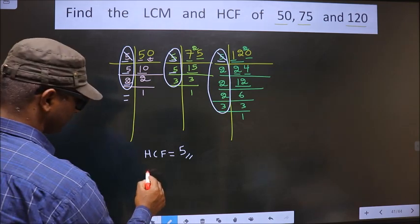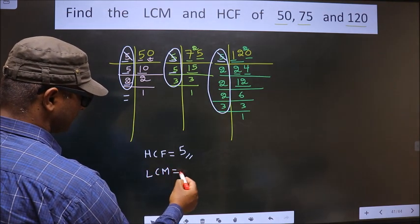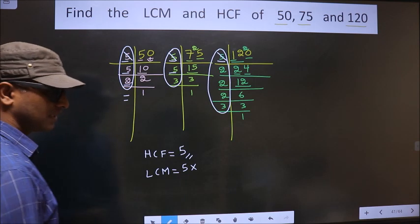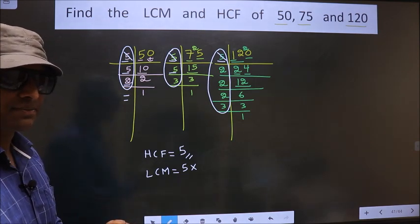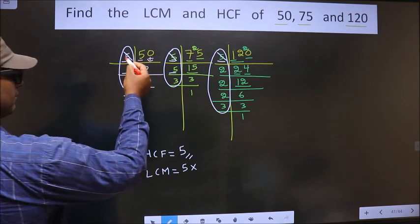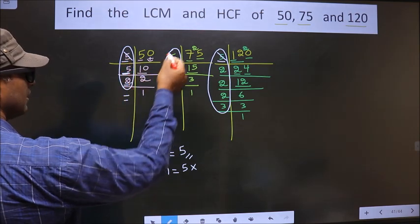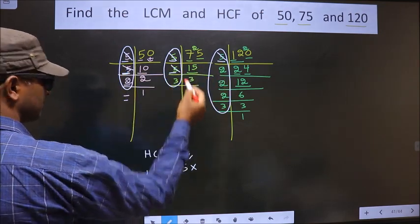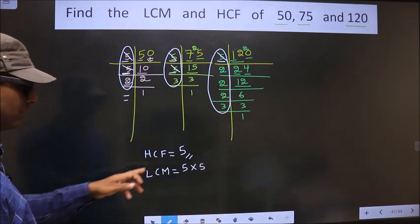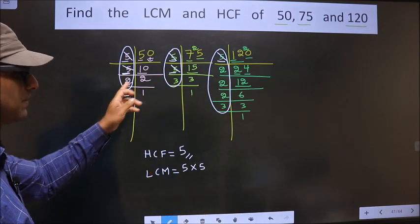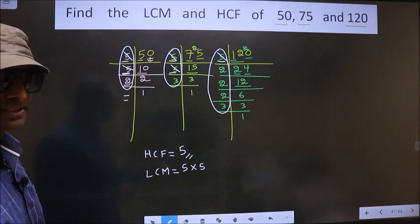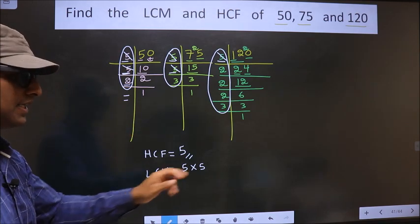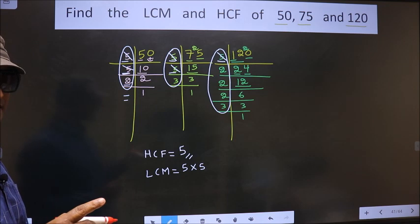Next. Now to get LCM. Whatever you got as HCF, to that we should multiply by certain numbers. How do we decide those numbers? See. Here 5 is cut. Now look at this 5. Do we have 5 here? Yes. Do we have 5 here? No. So cut these 2 5s right here. For HCF, number should be present in all the 3. For LCM, it is not like that. Even if it is present in 2 places or 1 place, still we cut and we write here. Clear with the difference?